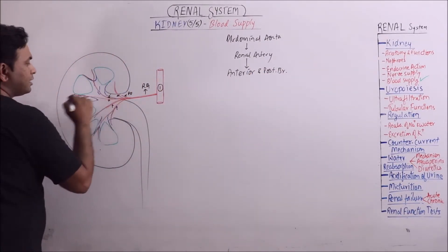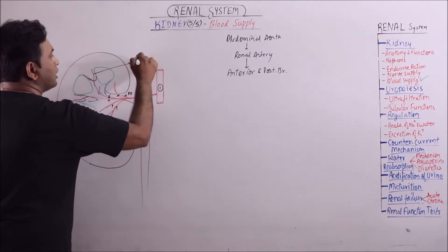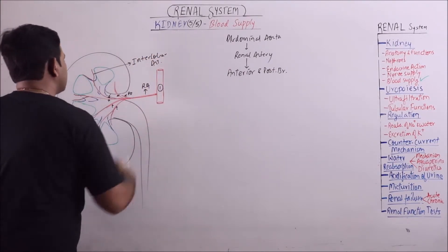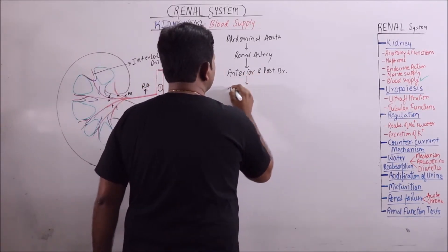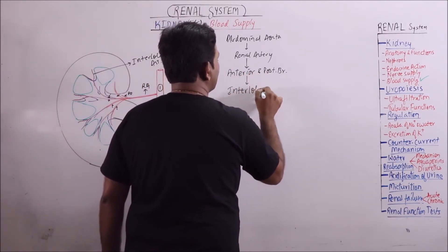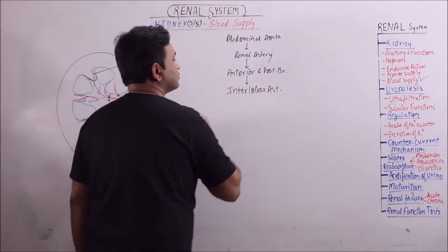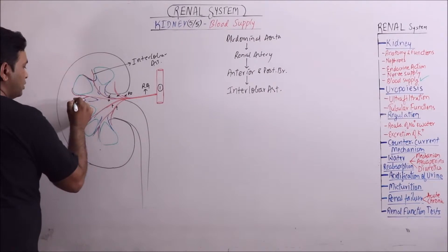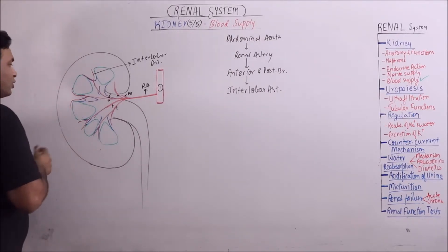These anterior and posterior branches divide into interlobar arteries. These interlobar arteries, near the base of the medullary pyramid, will form arcuate arteries.